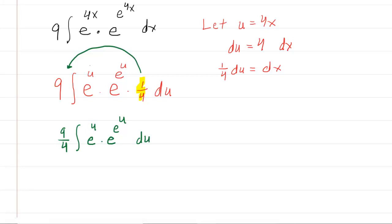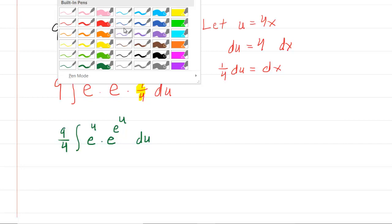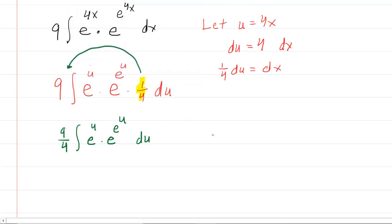Now this still looks rather challenging, and it is, unless we apply yet another round of substitution. We won't use u because we've already used u. So why don't we just let v equal e to the u. Again, we would need to differentiate that. So we would have dv equals, now the derivative of e to the u is just e to the u. And then we'll have du here.